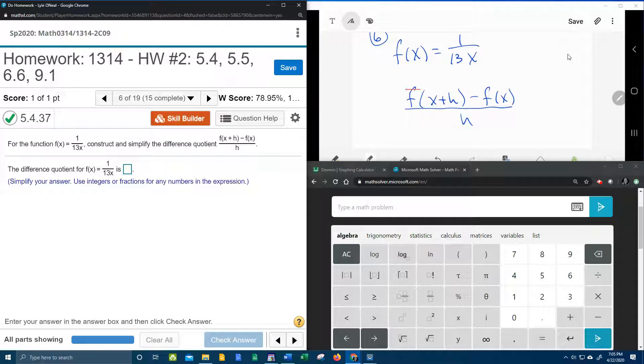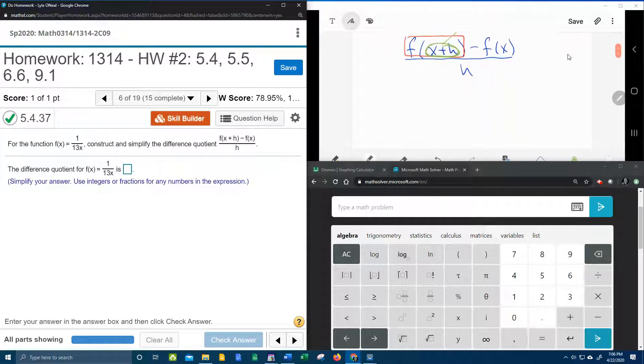The first thing we're going to do is find f of x plus h. What that says to do is take x plus h and plug it into x in f of x. So everywhere there's an x, we're going to put x plus h. That gives me 1 over 13 times the quantity x plus h, and that is the f of x plus h part.